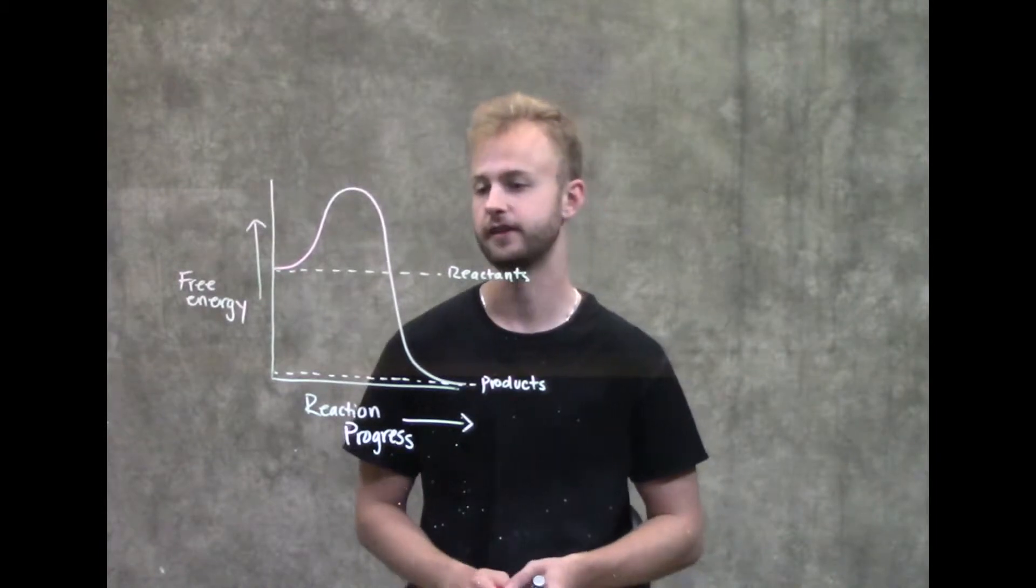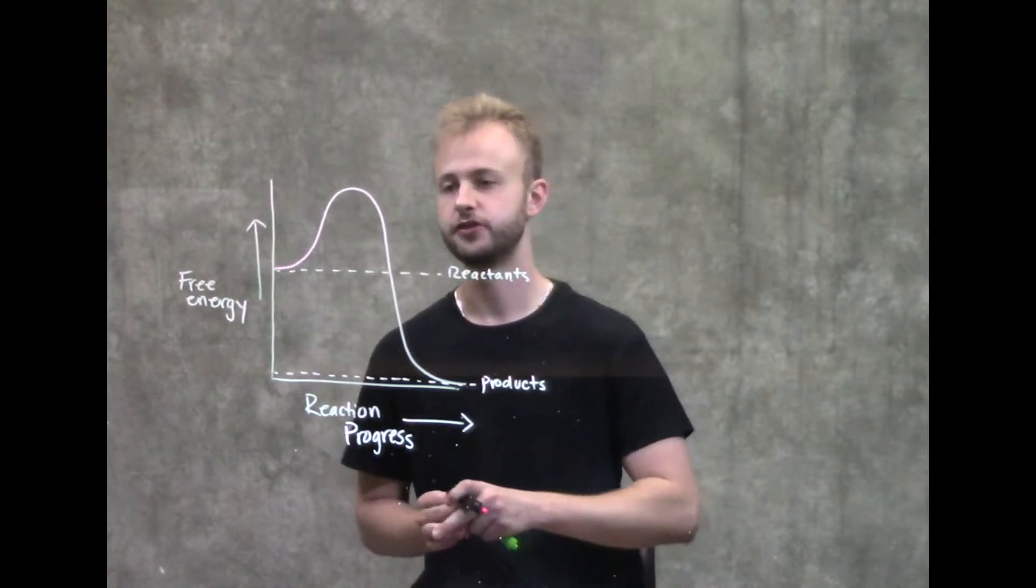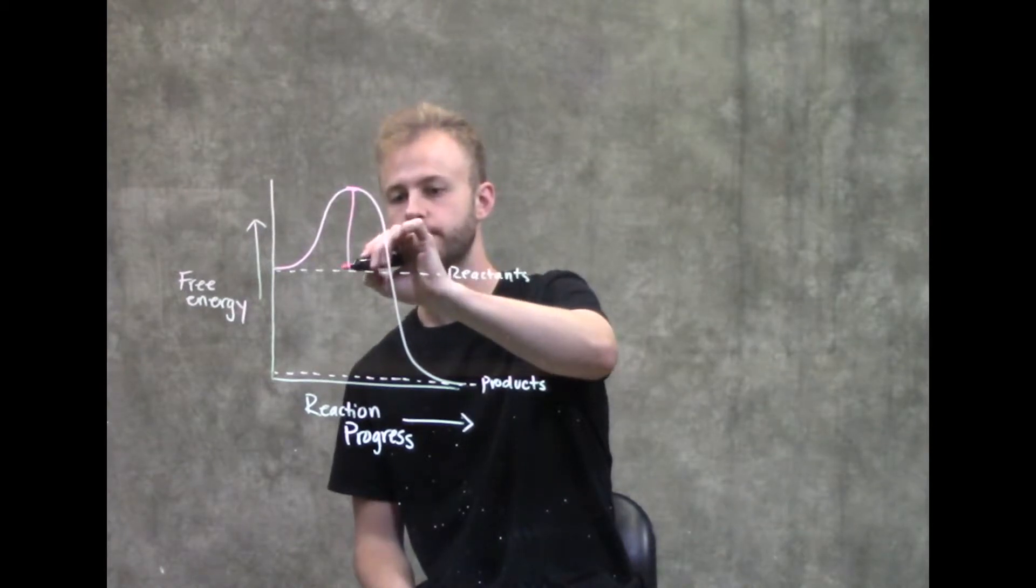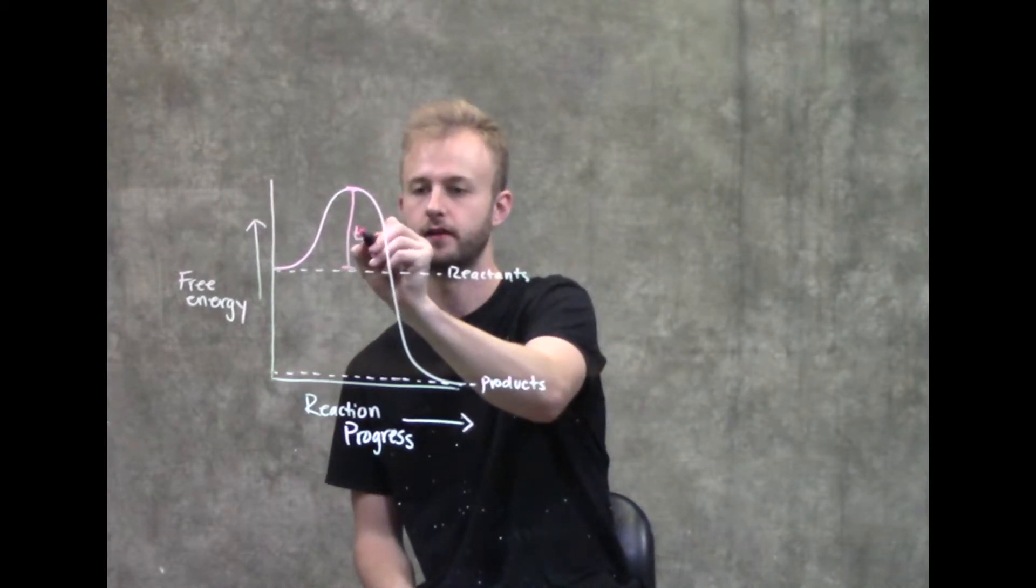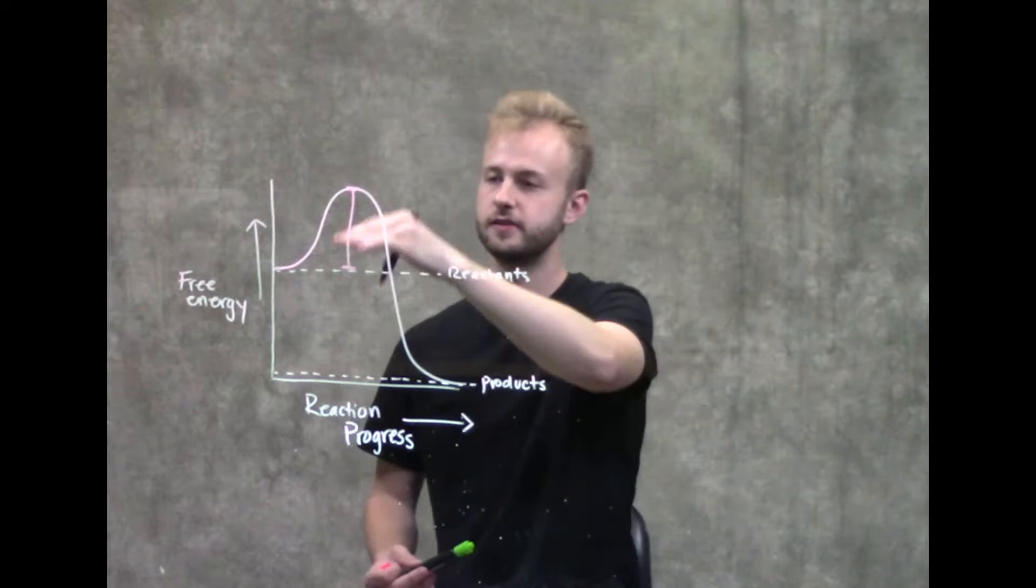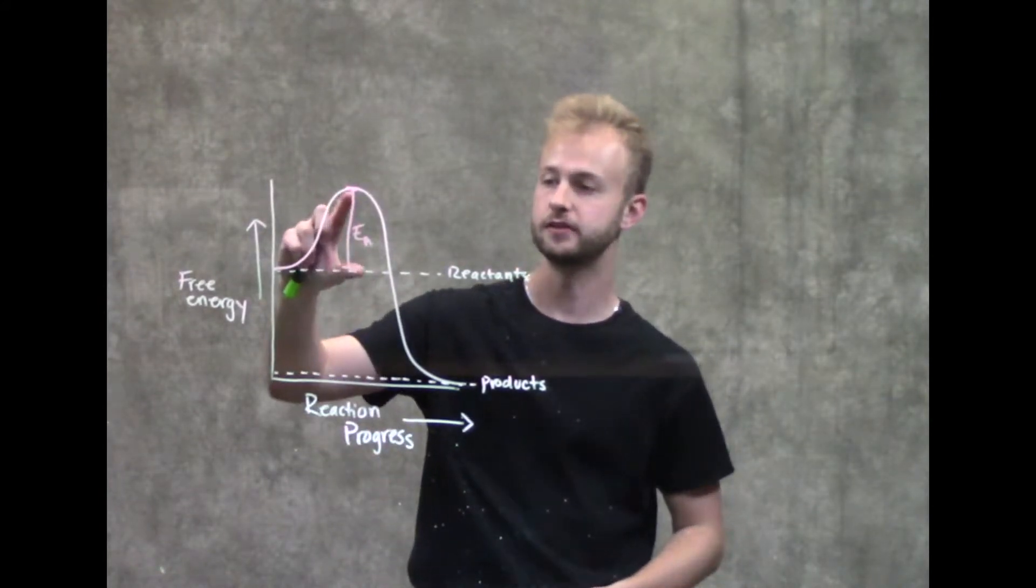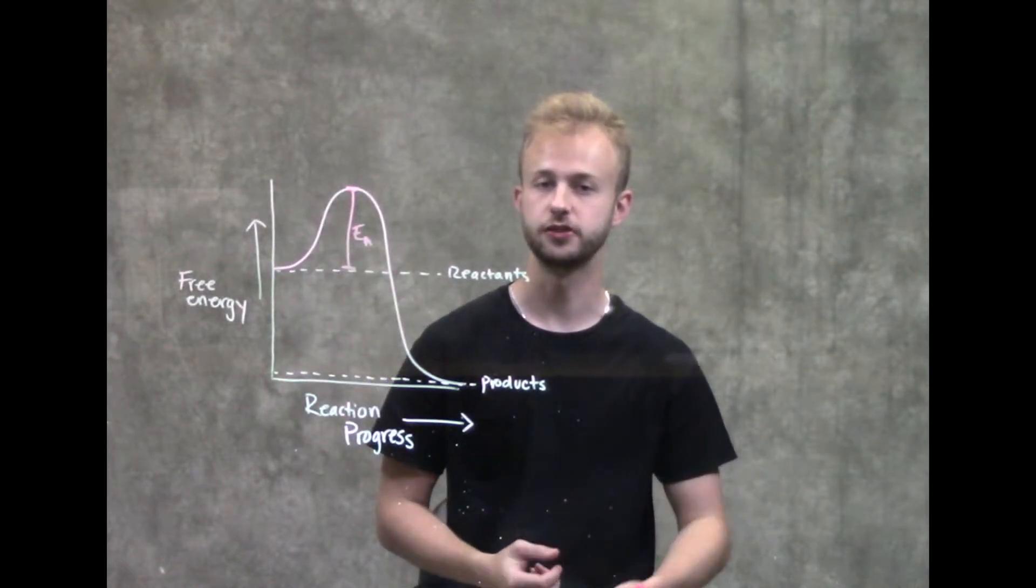On a graph like this, the energy of activation is going to be this amount of energy right here. This is what's actually making that barrier to this reaction going forward. Enzymes are going to make this smaller so this reaction can happen faster.